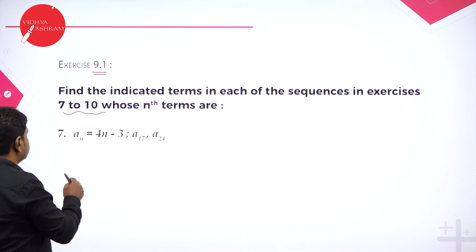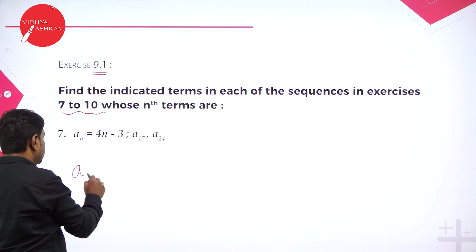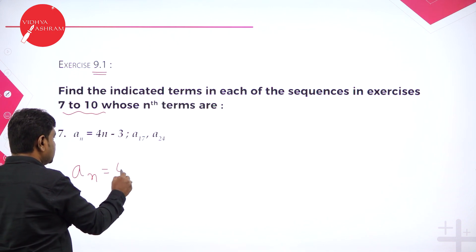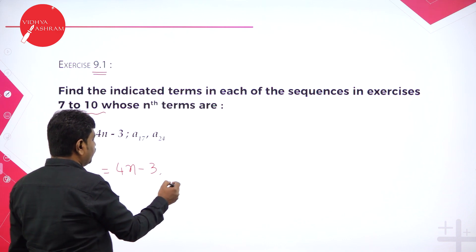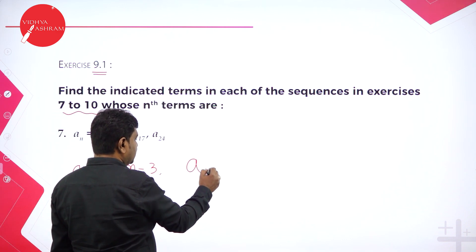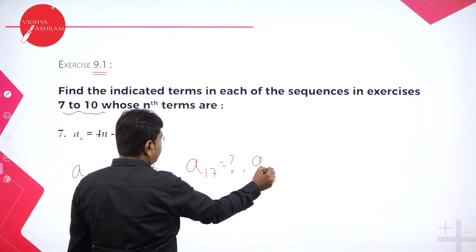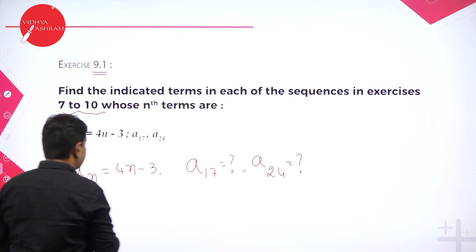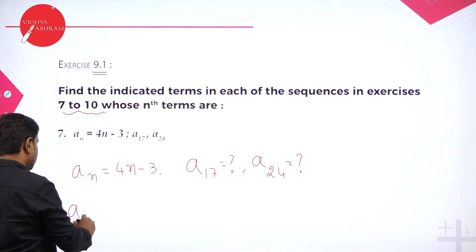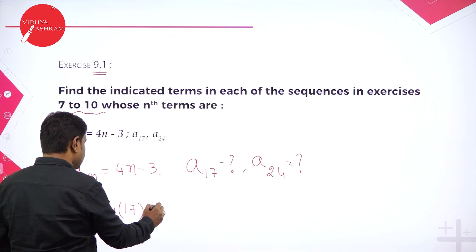In problem 7, they gave A1. What is A1? It is 4 times N minus 3. They want you to find A17 and also A24 — these are the two parts. A17 means: in the place of N, put 17. So it becomes 4 into 17 minus 3.